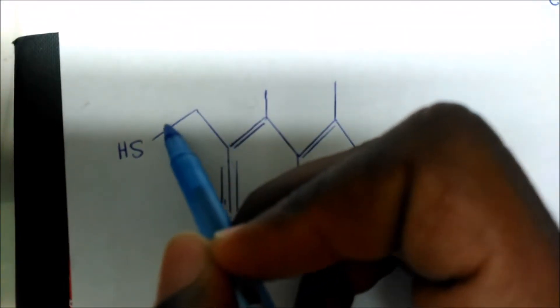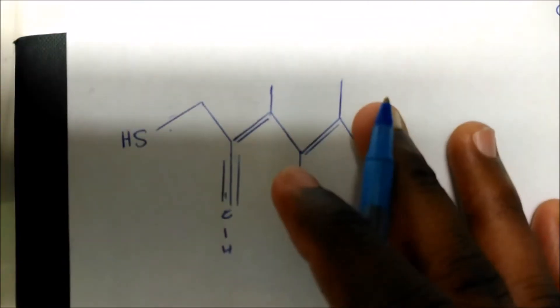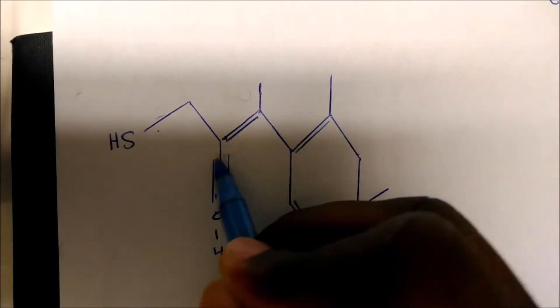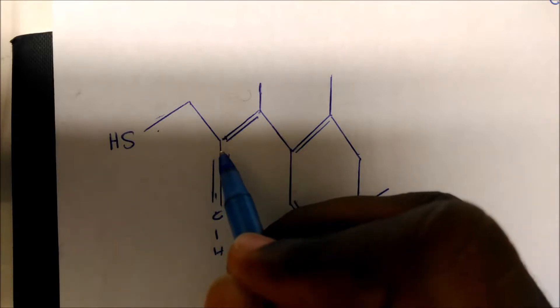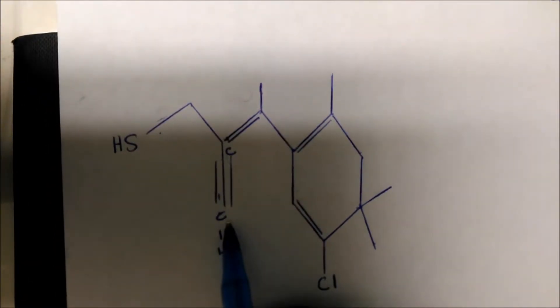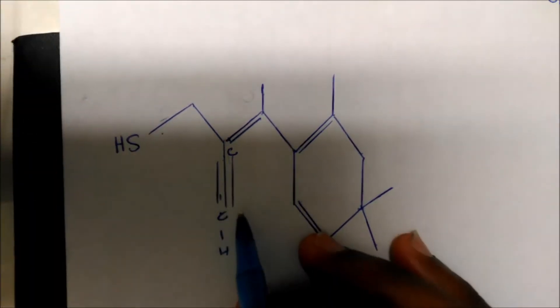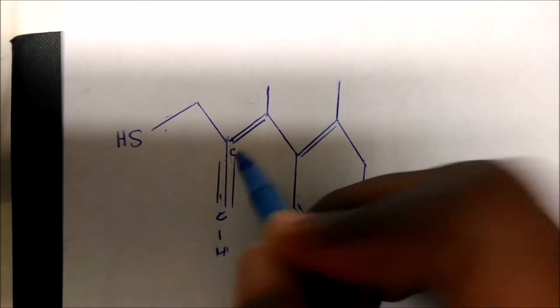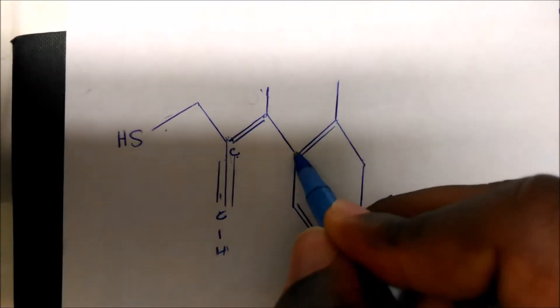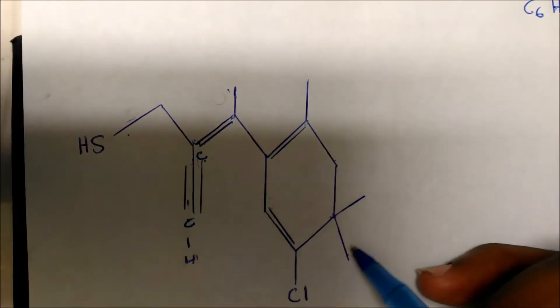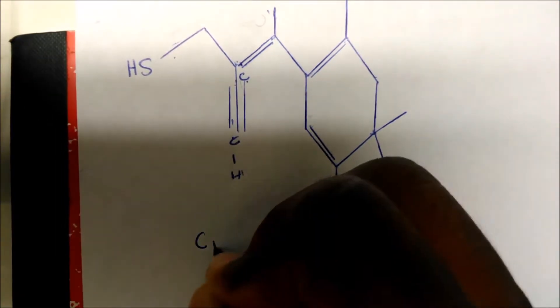Let's look at this compound. There's a sulfur here — not a carbon — so we have to be careful. Counting the carbons: there's a carbon bonded to a carbon via a triple bond, which is bonded to another carbon. Counting all endpoints and intersections carefully: 1, 2, 3, 4, 5, 6, 7, 8, 9, 10, 11, 12, 13, 14, 15 — we have 15 carbons, so this is C15.